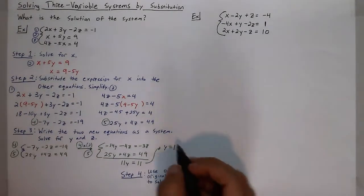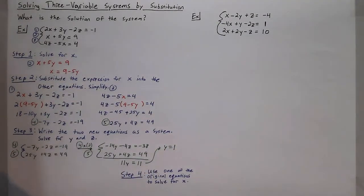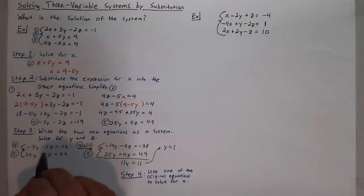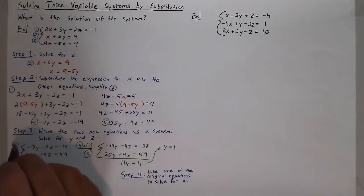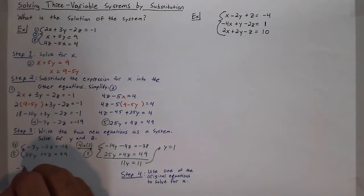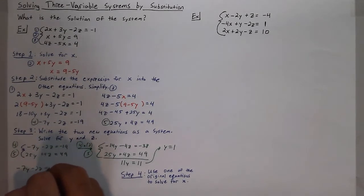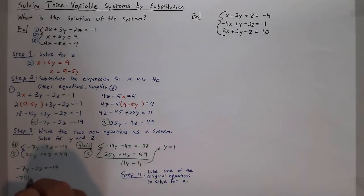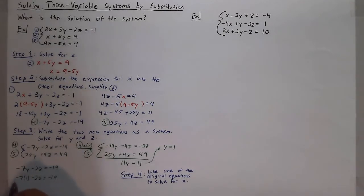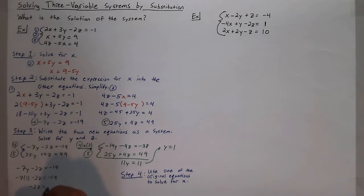Going back, I can plug y into either one of the original equations or into equation 4 or equation 5. I'll take negative 7y minus 2z equals negative 19 and plug 1 in for y. Solving gives me negative 7, and I can add that to the right, so I'll have negative 2z is equal to negative 12, meaning z is equal to 6.